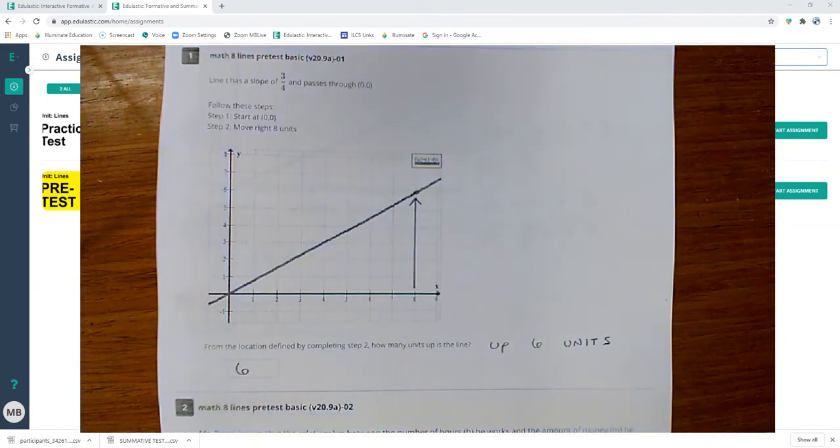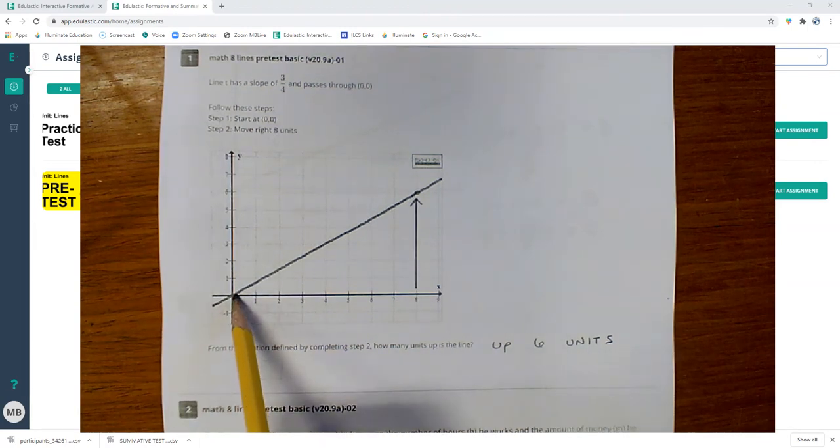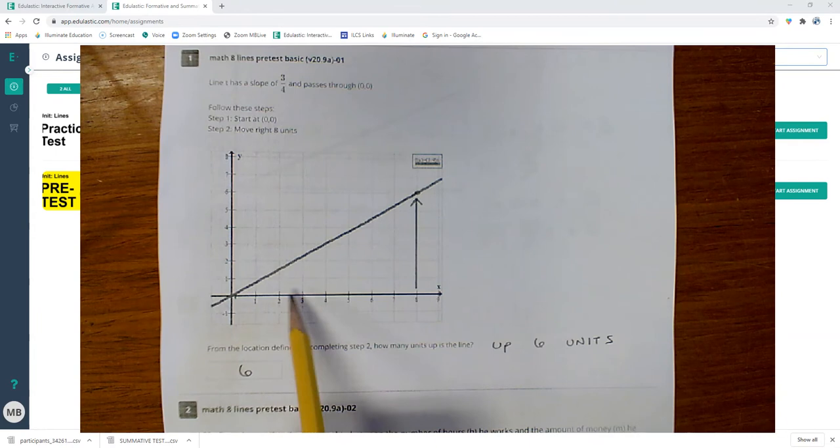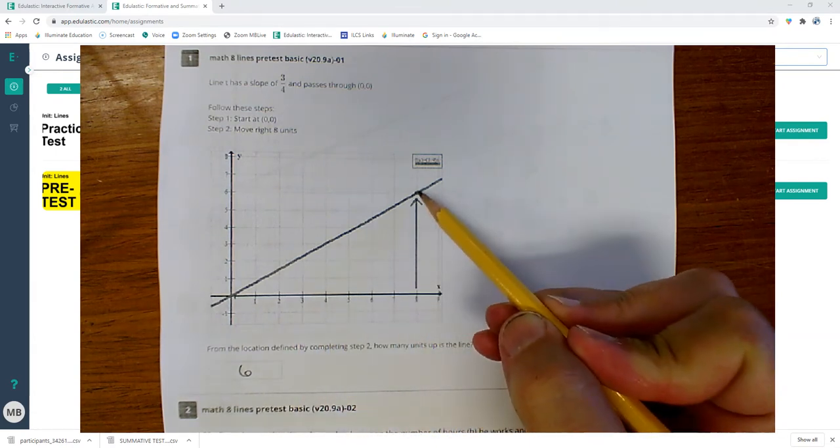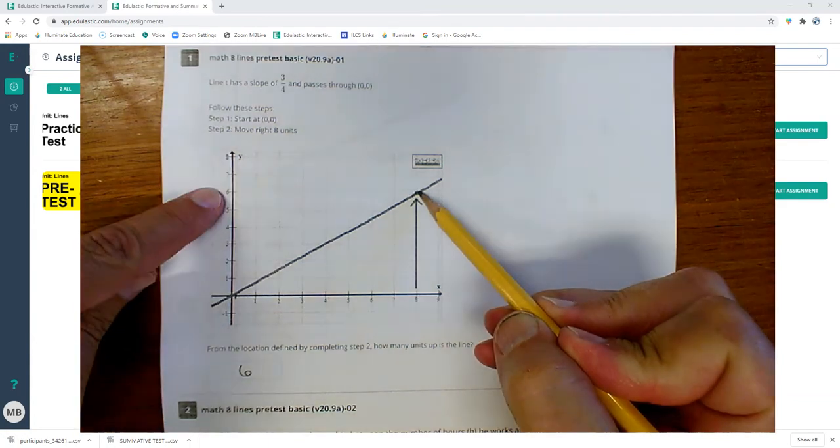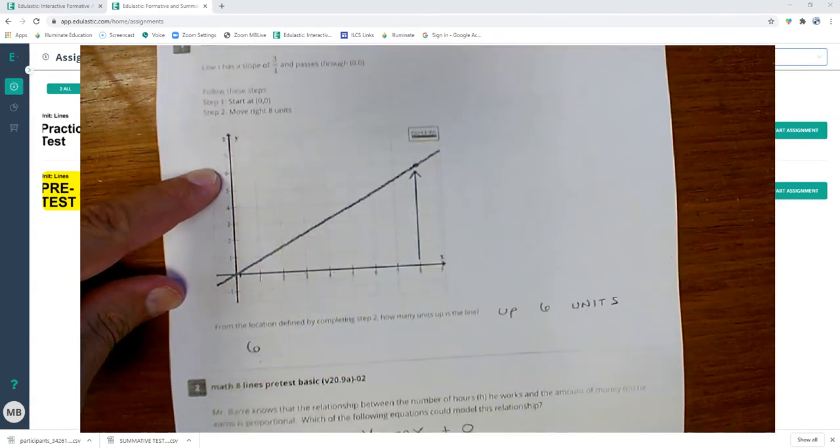So here we go. Question number one says to follow these steps: start at zero, zero, and then you need to move right eight units—one, two, three, four, five, six, seven, eight—and then move up. And where am I at? I am at six, that's my answer, right there, six.